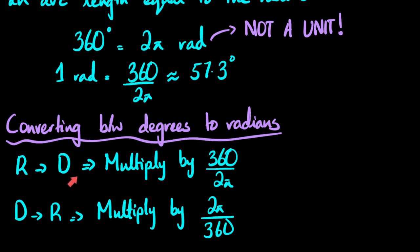And whatever you're going from, you keep that in the denominator. And you can also see this applying in the conversion from degrees to radians. So going to radians, you keep 2π at the top and 360 at the bottom, and vice versa.